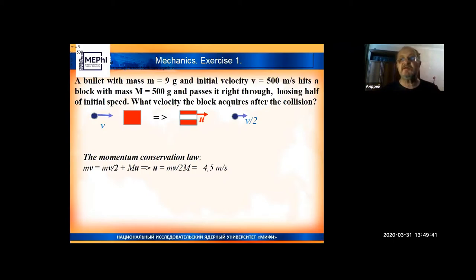Imagine you have a block, you see it as a red brick at the screen, and a bullet flying very fast with velocity of 500 meters per second and mass 9 grams. It passes right through the block and loses half of its speed. After passing the block, the bullet continues flying but with half of initial velocity. For those tasks you need just two or three instruments, that's all.